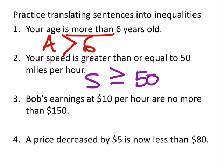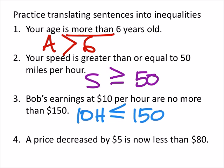Let's look at Bob's earnings. He's at $10 per hour, but his earnings are no more than $150. So this one would have $10 per hour times the number of hours, and it's no more than $150 — meaning it can't be bigger than $150, but it could be equal to. So we get $10 per hour times the number of hours has to be less than or equal to $150.